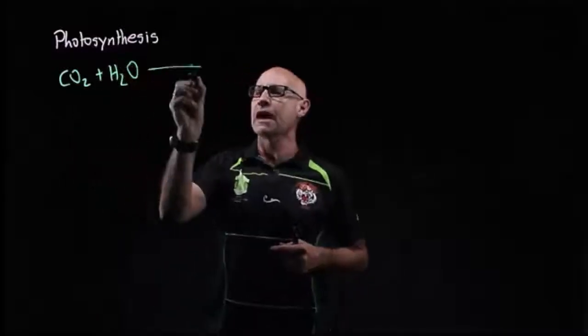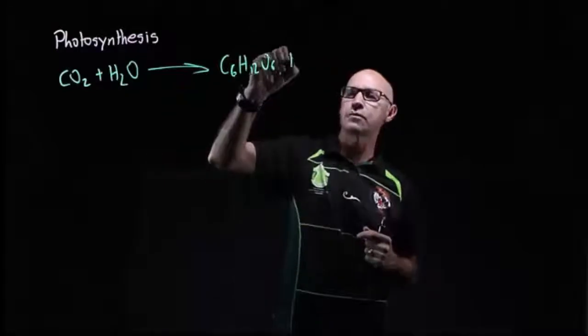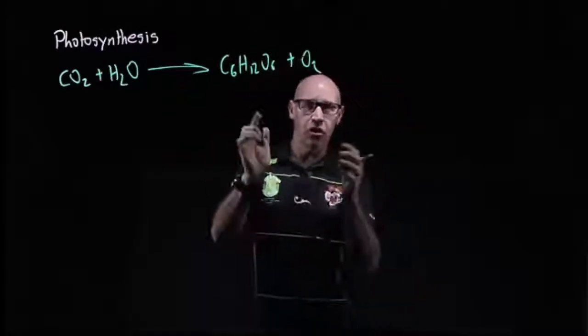Photosynthesis can be summarized by saying that we're taking inorganic material, CO2 and H2O, and converting it into organic compounds, glucose, and also producing as a byproduct, oxygen.